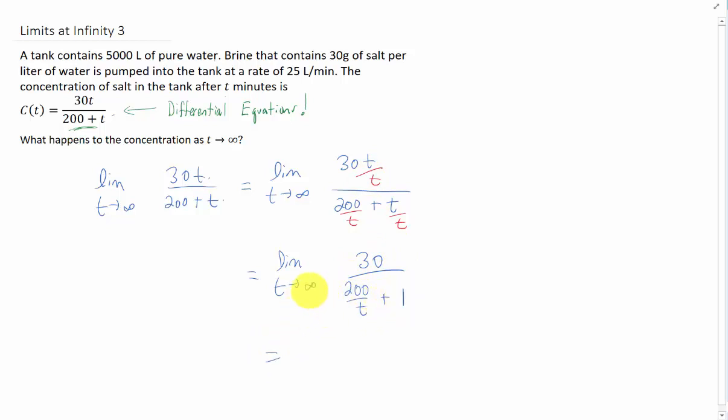As T goes to infinity, this term will go to 0, and you will just get 30 over 0 plus 1, or 30.